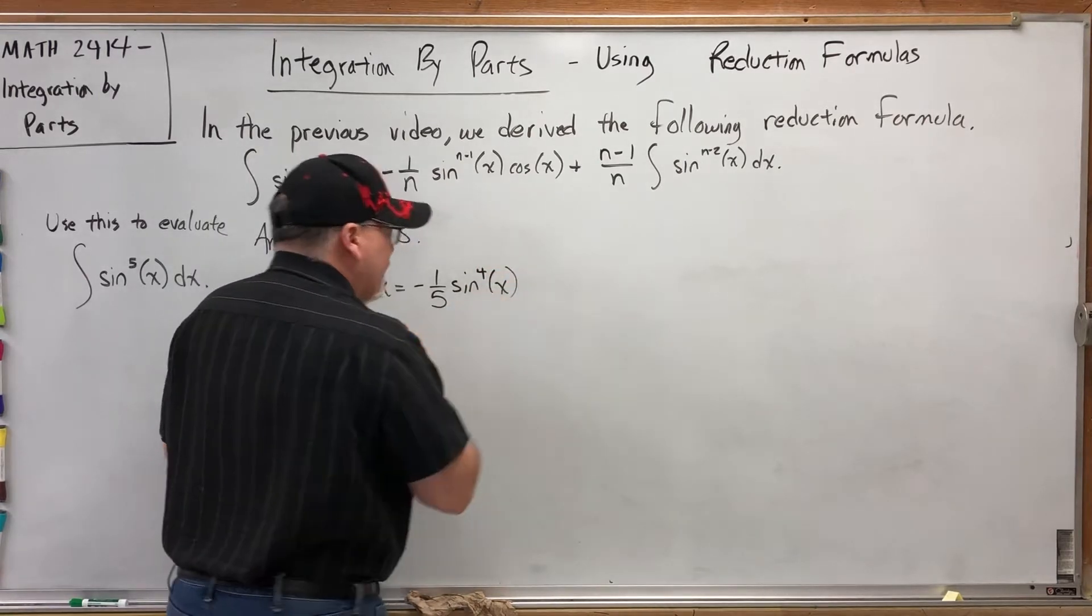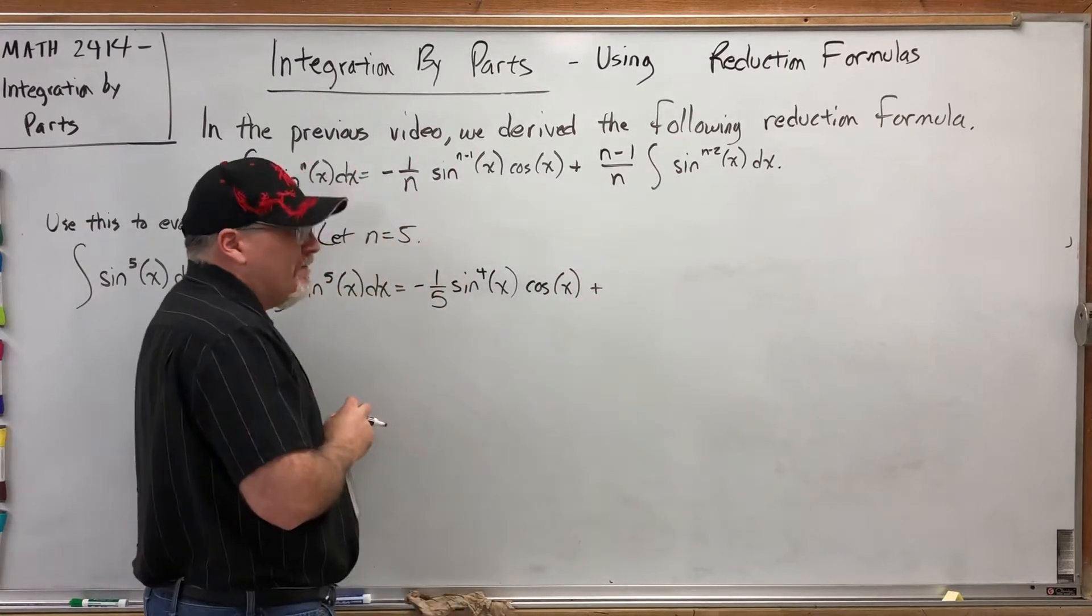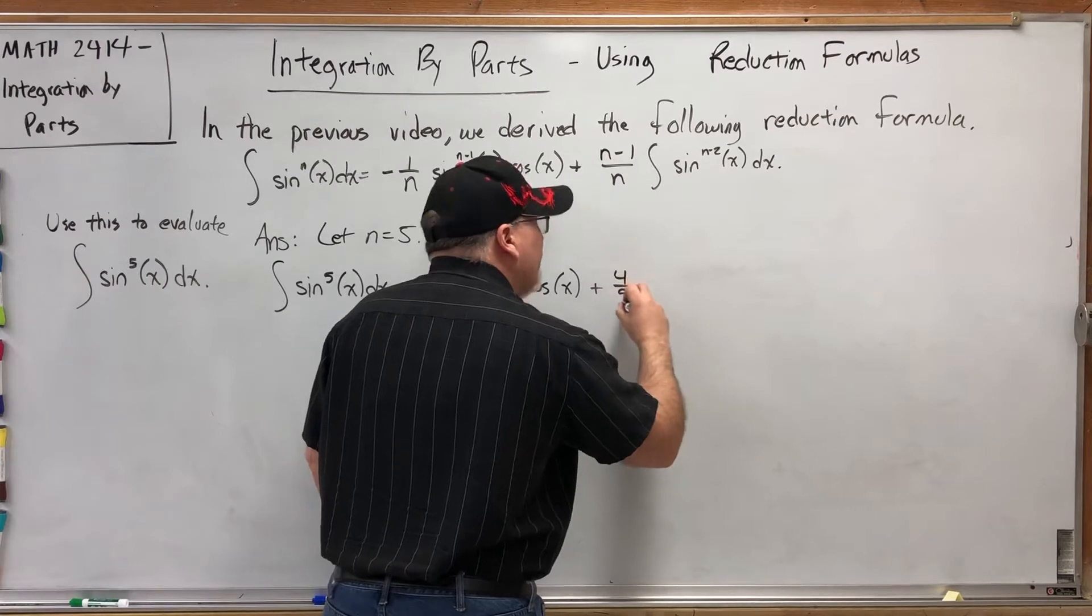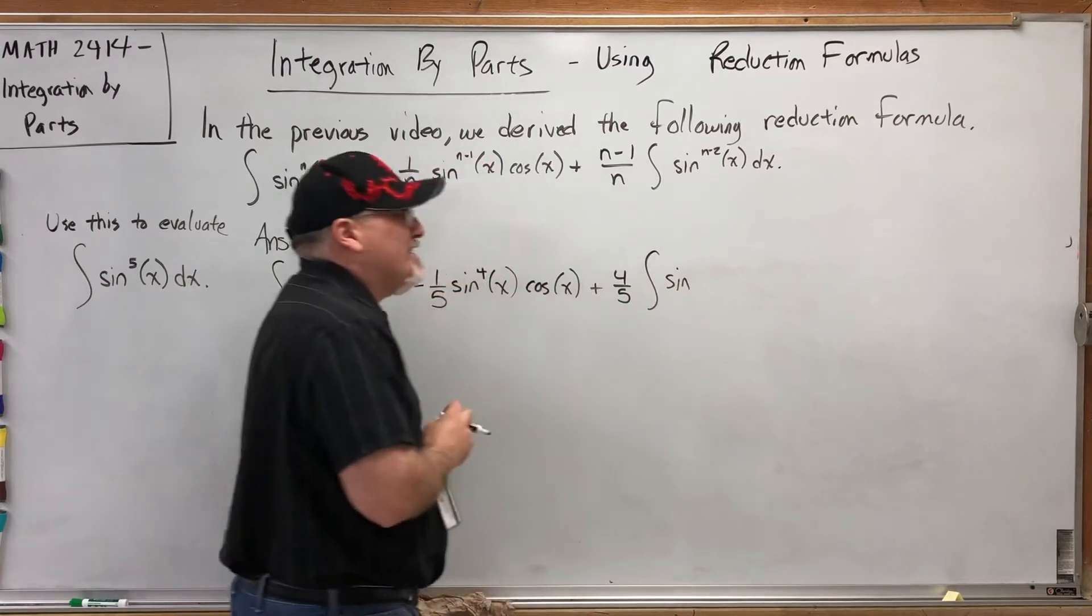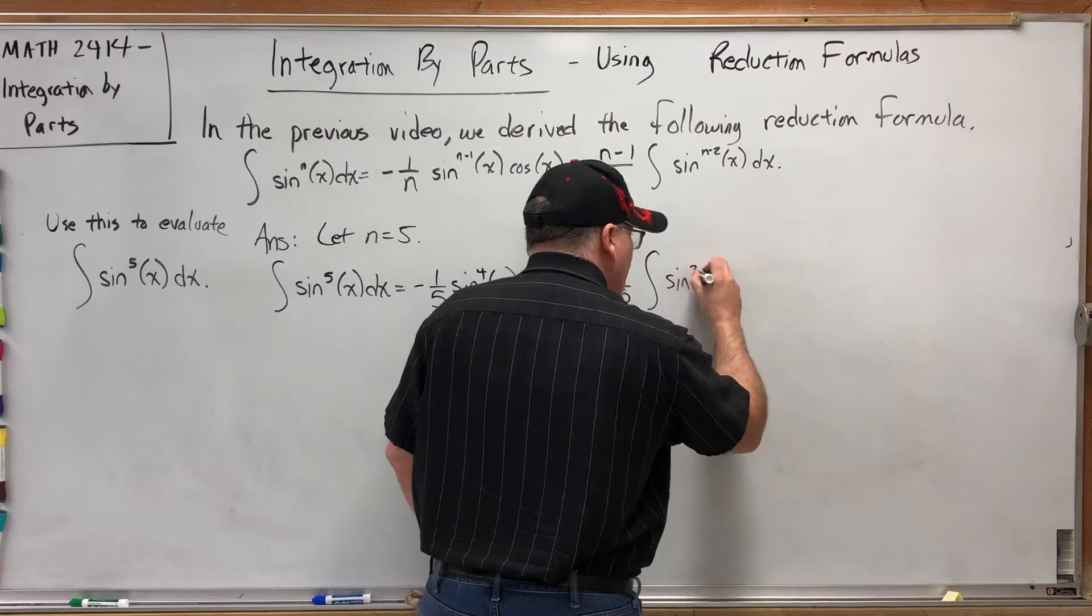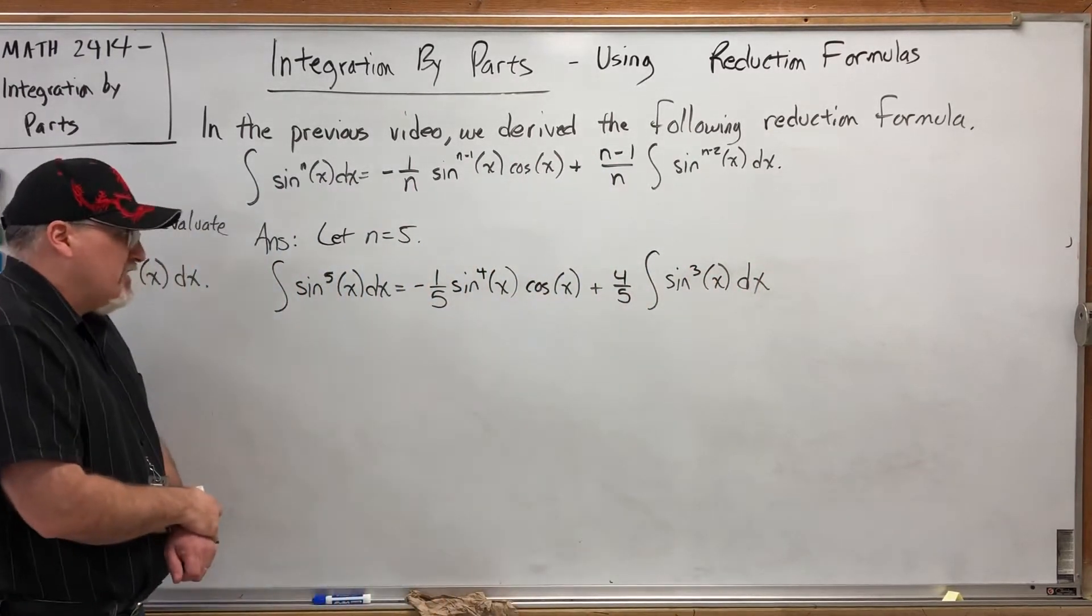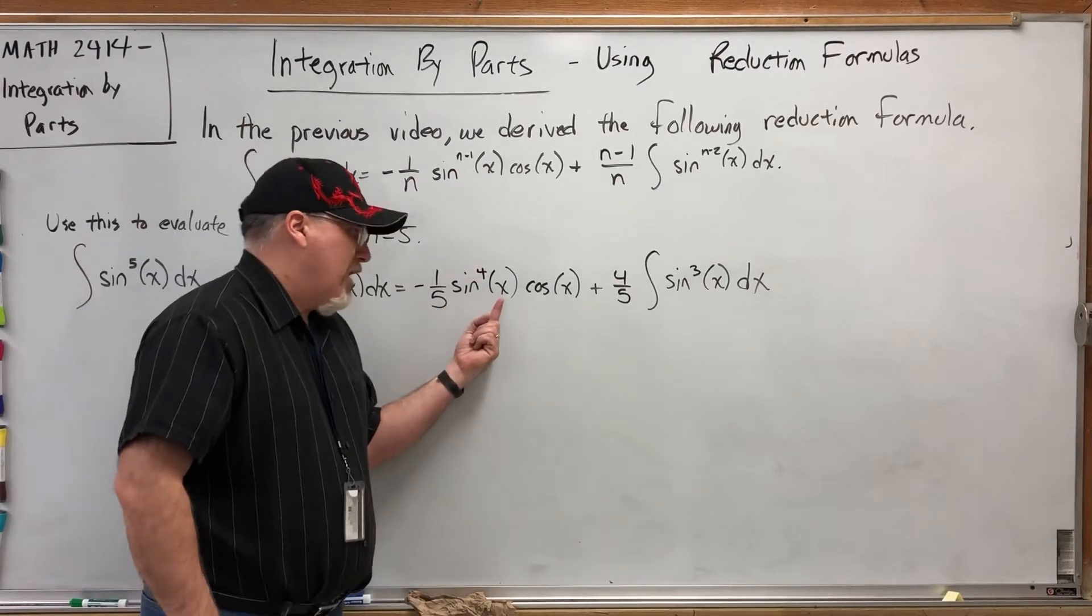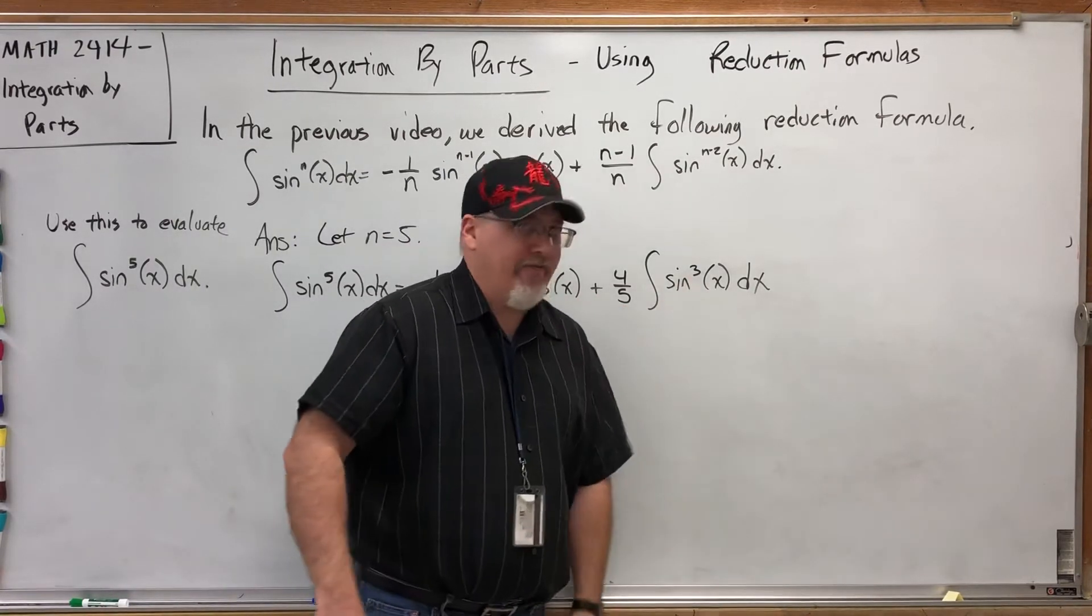Plus 4 fifths integral of sine to the n minus 2, which is 5 minus 2, so sine to the 3rd power of x dx.